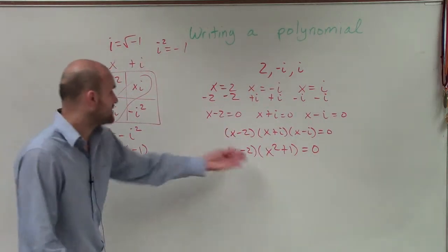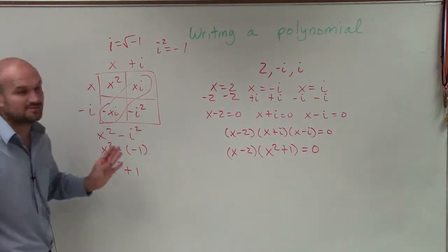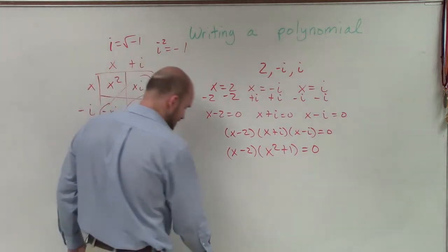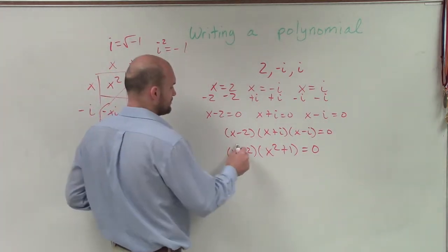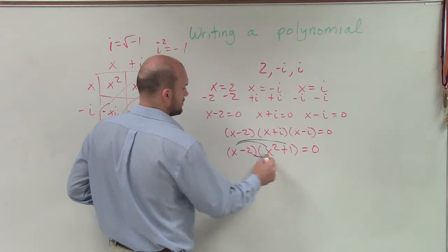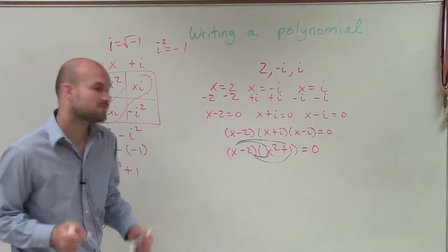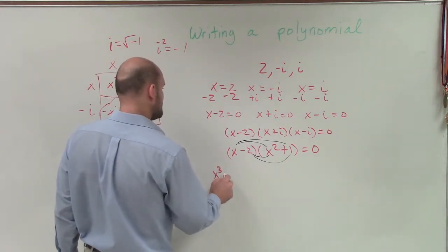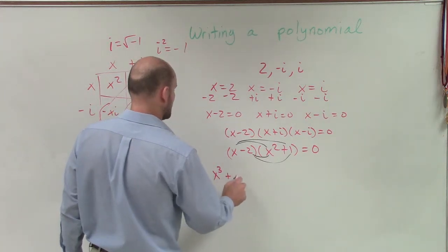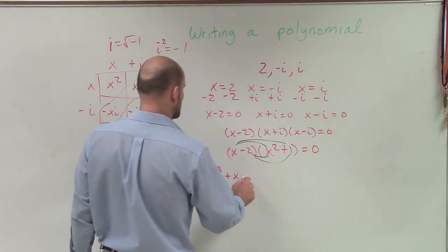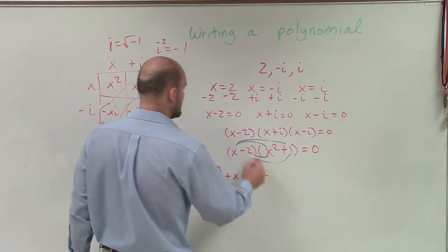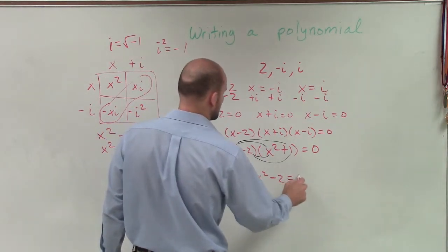Now I just need to multiply these out. And you can go ahead and do, again, the box method if you like. Or if you're comfortable with just applying FOIL, you can do that as well. So x times x squared is going to be x cubed. x times 1 is going to be plus x. Negative 2 times x squared is going to be a negative 2x squared. Negative 2 times 1 is minus 2 equals 0.